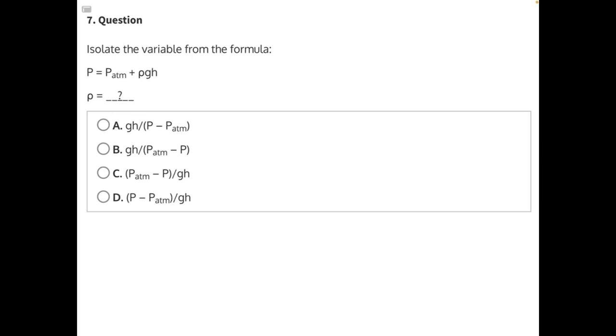Isolate the variable from the formula. To do this, we need to take everything that is not our variable ρ and move it to the other side of the equal sign so that we can completely isolate ρ.